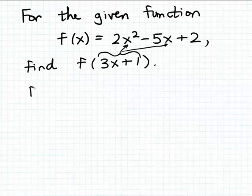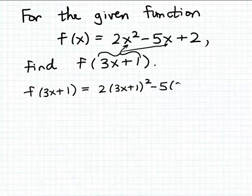So let's do that and then let's do the simplification of the result. So f of 3x plus 1, that's going to be equal to 2 times 3x plus 1 squared. See, I'm just substituting 3x plus 1 for x in the function formula, for the input variable x in the function formula. And then minus 5 times, and again I'm going to substitute 3x plus 1 for x. So minus 5 times 3x plus 1 and then plus 2.